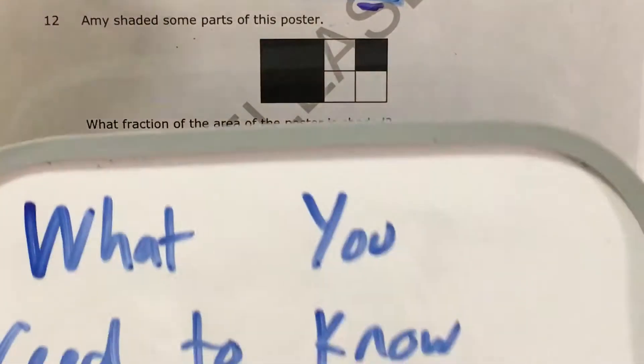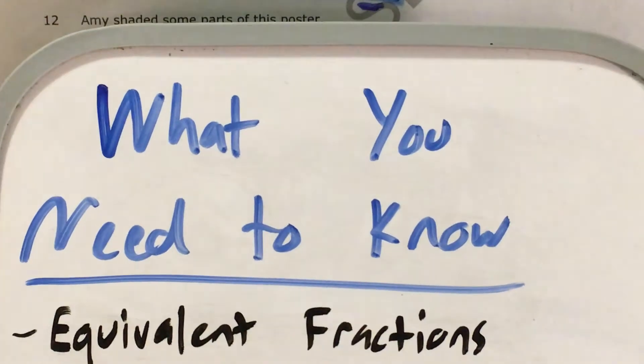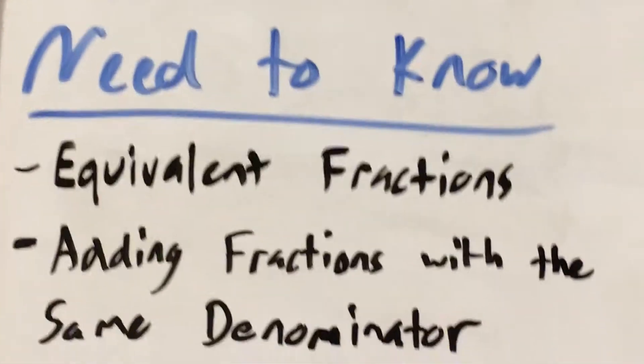We can see that Amy has this poster and she has shaded this big part here and this little part here, and we're supposed to figure out what fraction of the area of this poster is shaded. Now the two big skills that this question will test us on are equivalent fractions and adding fractions that have the same denominator.